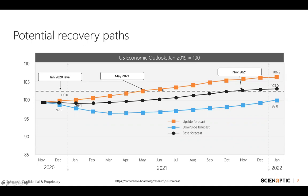The downside forecast is a pessimistic view — a double-dip recession scenario — assuming a large spike in COVID-19 and lockdowns, no additional fiscal stimulus in 2021, no vaccine, and a bumpy political transition. Under that downside scenario, recovery is still not there until 2022. We hope reality is somewhere in the middle — personally, I wish it's closer to the orange line than the black, but that's something we need to see.